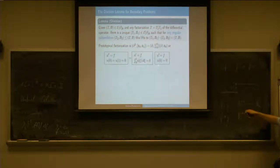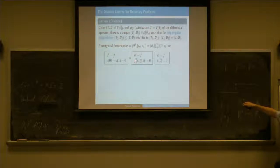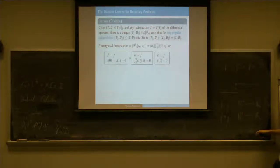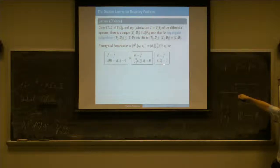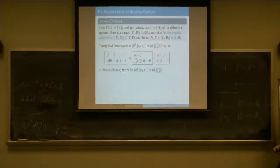The typical case is as I showed earlier: you have the left problem with the global condition, and even if you use another condition here—like u(1)=0, or u(0) minus u(1)=0—still on the left side you will have the same boundary problem.